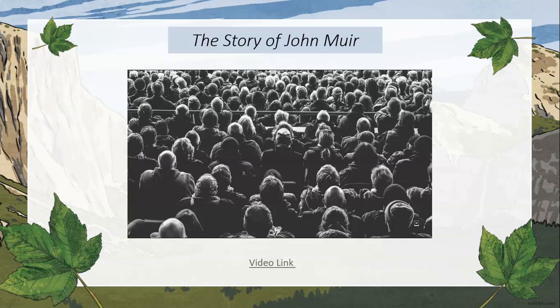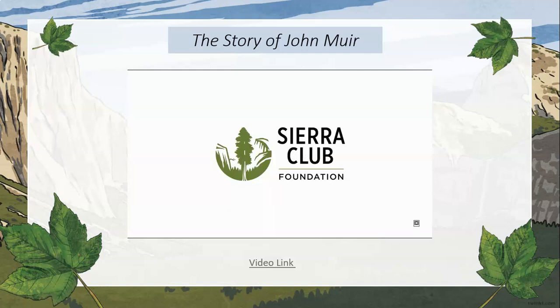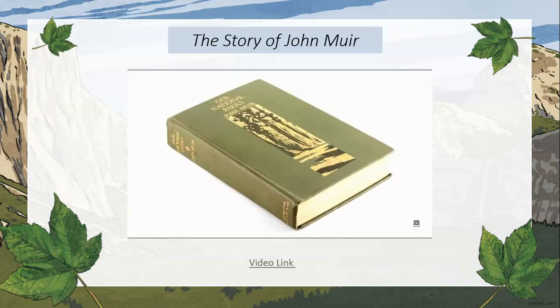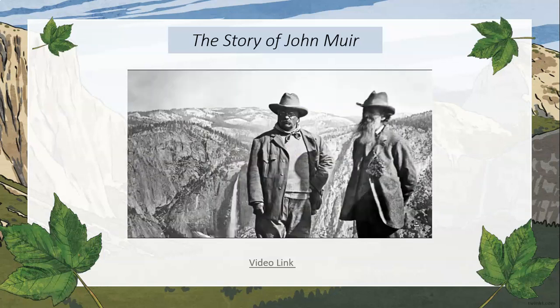Many people suggested to Muir that some sort of association should be made to protect the new national parks from stockmen and others who had ruined the boundaries of the parks. So in 1892, he and his supporters created the Sierra Club. In Muir's words, the aim of the Sierra Club was 'to do something for wilderness and make the mountains glad.' He served as president until he died. In 1901, Muir's book 'Our National Parks' drew attention, and in 1903, President Roosevelt visited Muir in Yosemite, where the two created the foundation for Roosevelt's conservation programs.